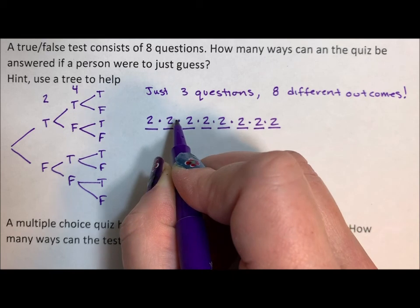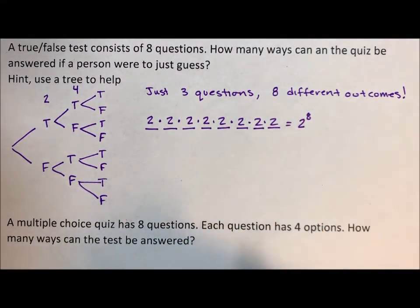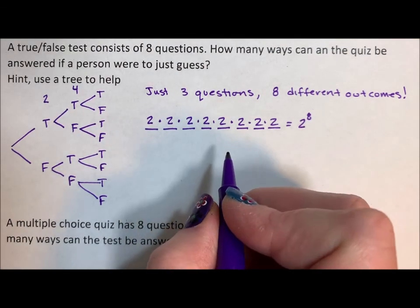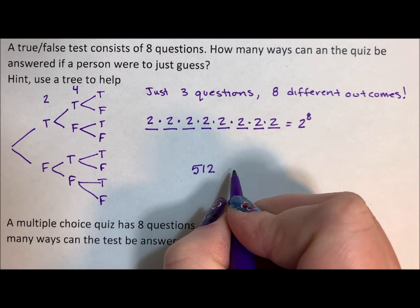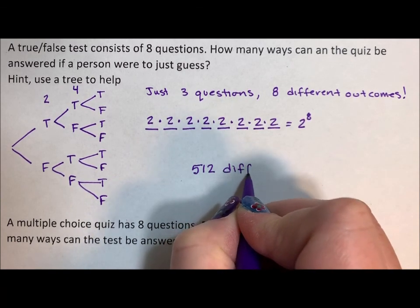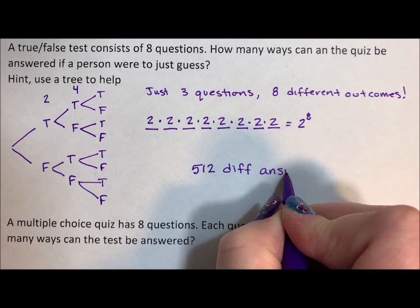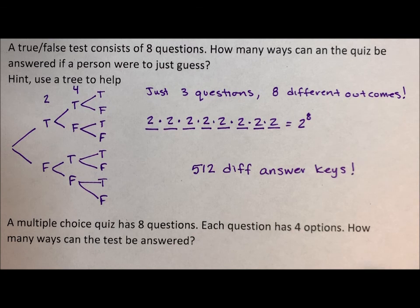Two, three, four, five, six, seven, eight. So we end up with two to the eight as the total number of ways this quiz could be answered if you were purely going to guess. And two to the eight is 512. So you could really think of this as 512 different answer keys. That's just on an eight question quiz.